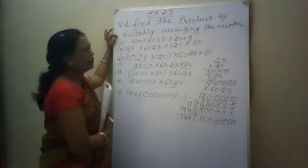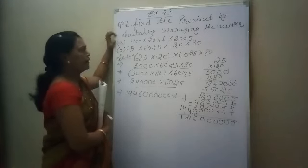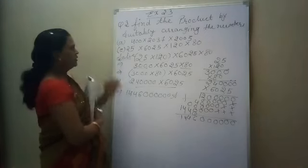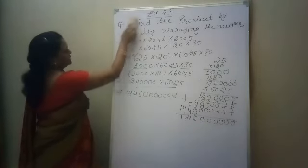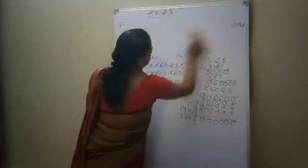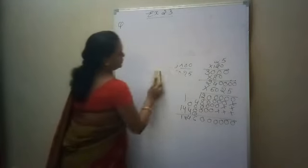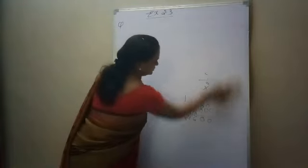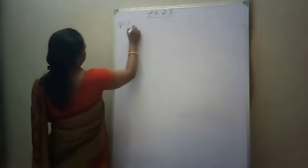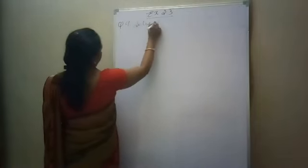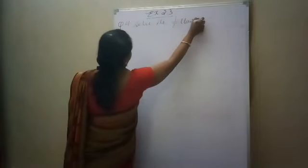Question number 3 only depends on the suitable arrangement of the numbers. Now we will continue the class with question number 4. Question number 4 is: solve the following. In question number 4, we will do the division process.